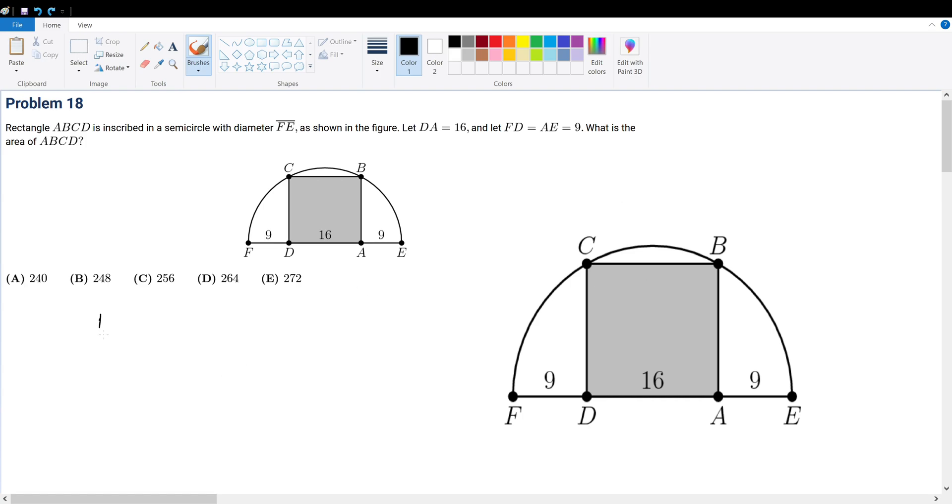When I just look at this, I already think the answer is 16 squared, which is 256. I think it's C because it looks very similar to a square. On the test, I would recommend just doing that because I do believe the answer is C.